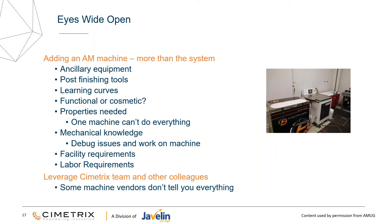When you go in to add an AM machine, make sure you've thought about everything — all the costs related to it. Think about ancillary equipment, post-finishing tools, the learning curve, whether it's functional or cosmetic, the facilities and people that you need. Some vendors aren't as open about telling you some of those things. AMUG is a great opportunity to hear from actual users about how they're implementing the technology. Just do your homework before you purchase a machine to make sure you've thought of everything.